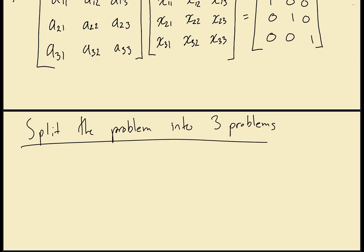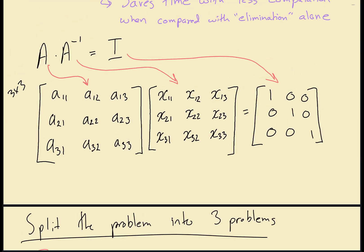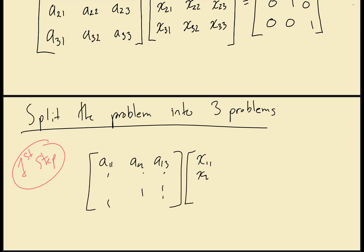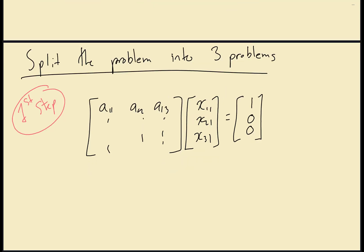In the first step, we take our coefficient matrix A and for the inverse we take only the first column: x11, x21, and x31. We set this equal to the first column from the identity matrix, which is 1, 0, 0. Just like in the last lecture, we use LU decomposition. We have LUx equals b, where Ux equals d, and we solve for the x vector — which gives us the first column of the inverse.